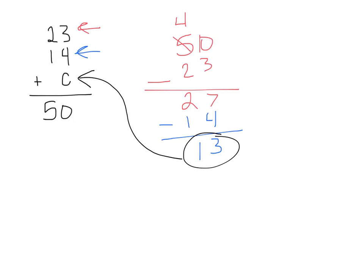How can we double check that? Let's plug 13 into the problem. We'll write 23 plus 14 plus 13, adding all of these up. 3 plus 4 plus 3 equals 10, carry the 1. 2 plus 1 plus 1 plus 1 equals 5, so our answer is 50. This way we can justify our answer of 13 and say it is reasonable.